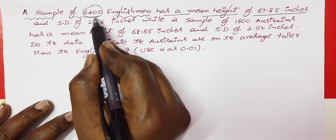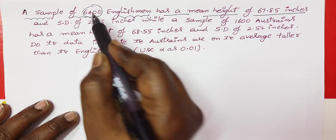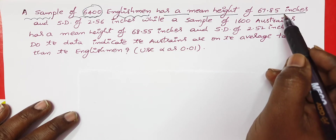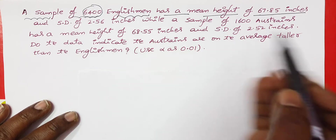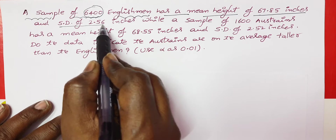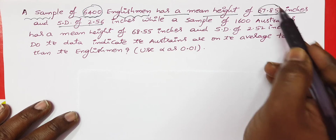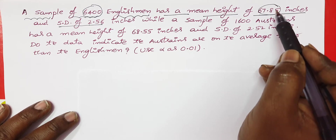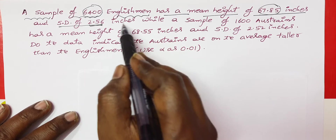The 6400 Englishmen have a mean height of 67.85 inches and a standard deviation of 2.56 inches.